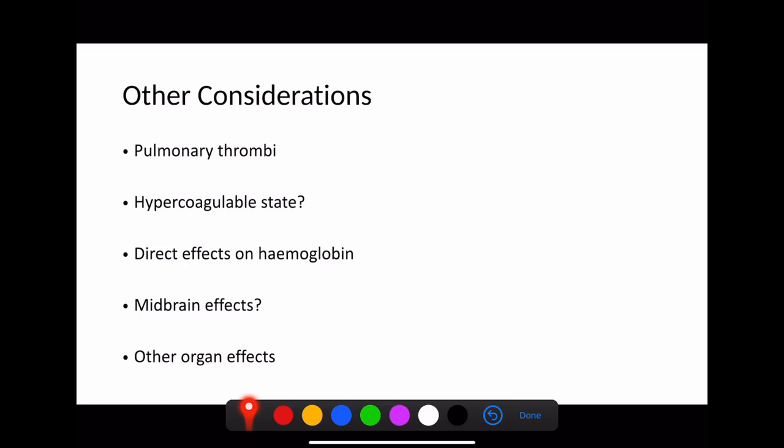So the final thing that's worth thinking about is other considerations. There's a lot of talk about these patients having a hypercoagulable state and having pulmonary microthrombi in addition to large segmental pulmonary emboli. This is thought to be due to being hypercoagulable, but certainly in these early histological cadaveric studies, they have not found, or at least not commented, on seeing pulmonary emboli or evidence of pulmonary infarction.